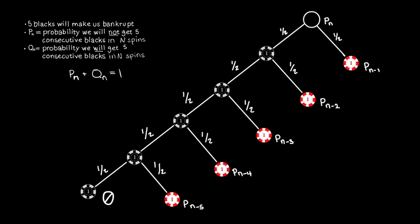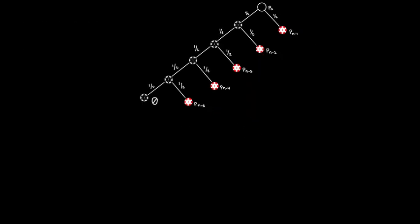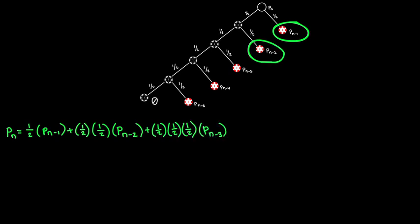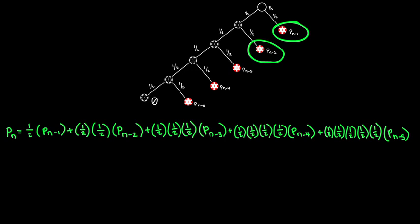So we now get the following beautiful formula for p of n. p of n is half pn minus 1, because half the time we land here, plus a half times a half pn minus 2, because that's the probability we land here, and so on. So notice, once we know five consecutive terms, we know the next, and we can just walk down the line. So all we need is the first five values of p.